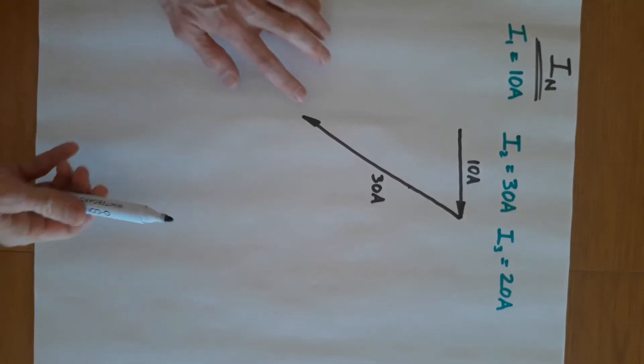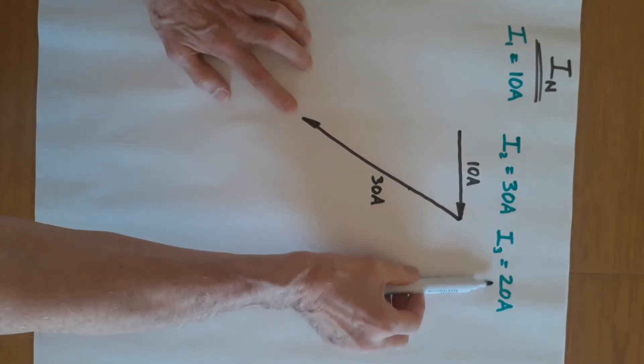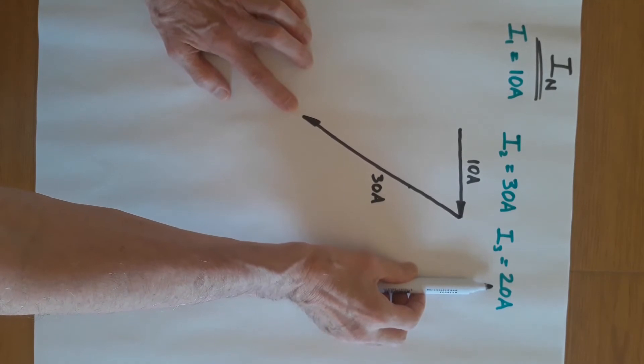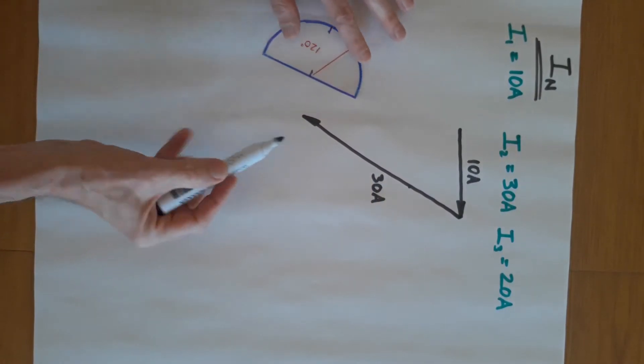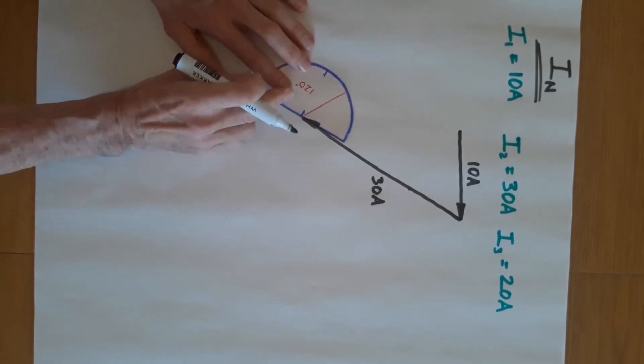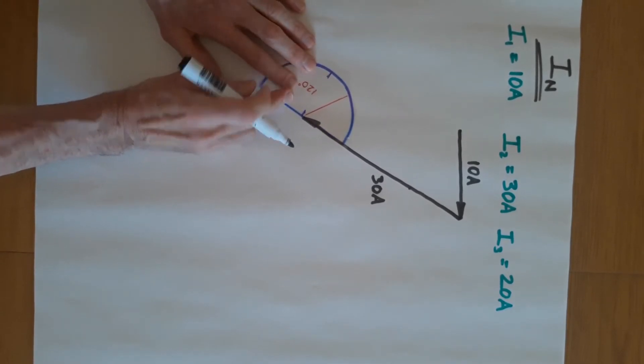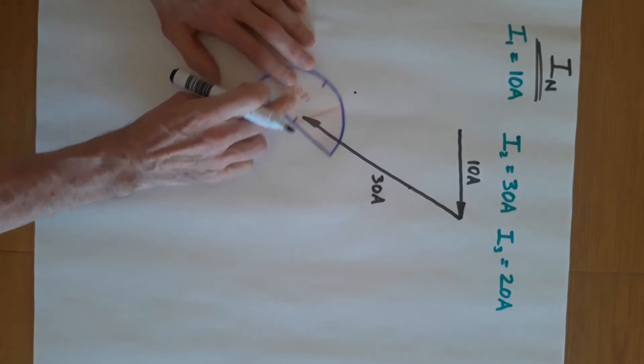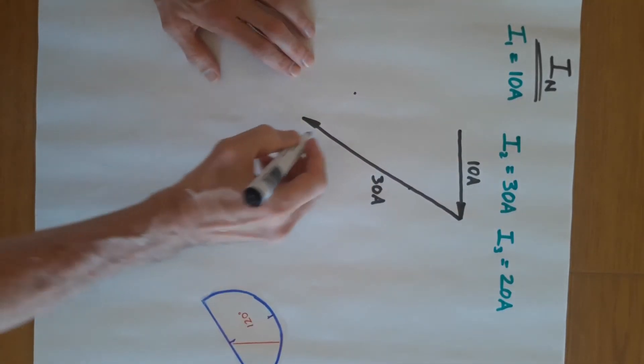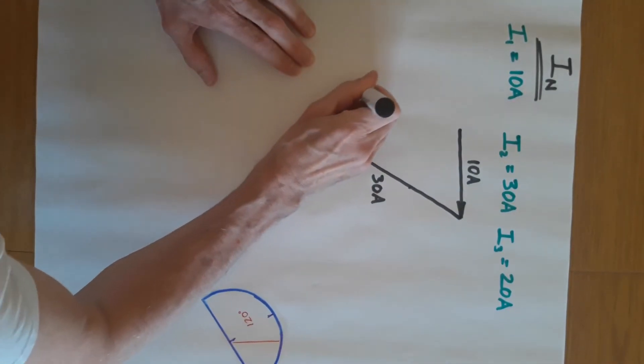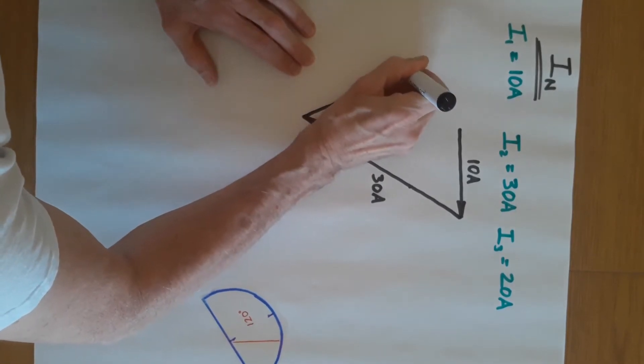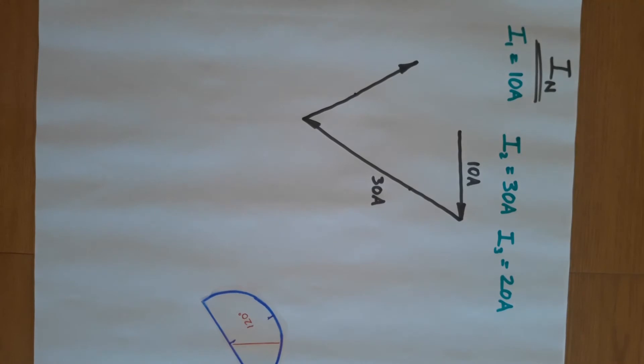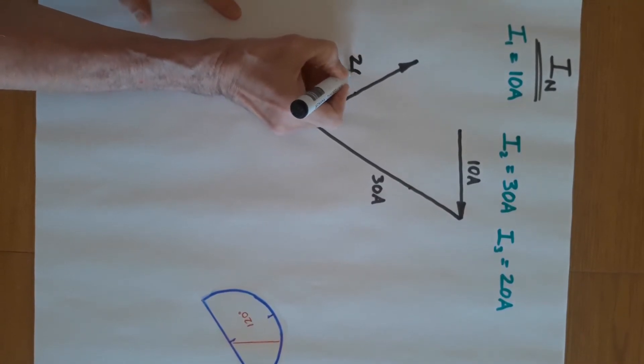Okay, and then we're going to repeat that step for the final current which is 20 amps. Get your protractor, put it on the very end of the line you just completed, put a mark, and we then want 20. So that's 20 amps.